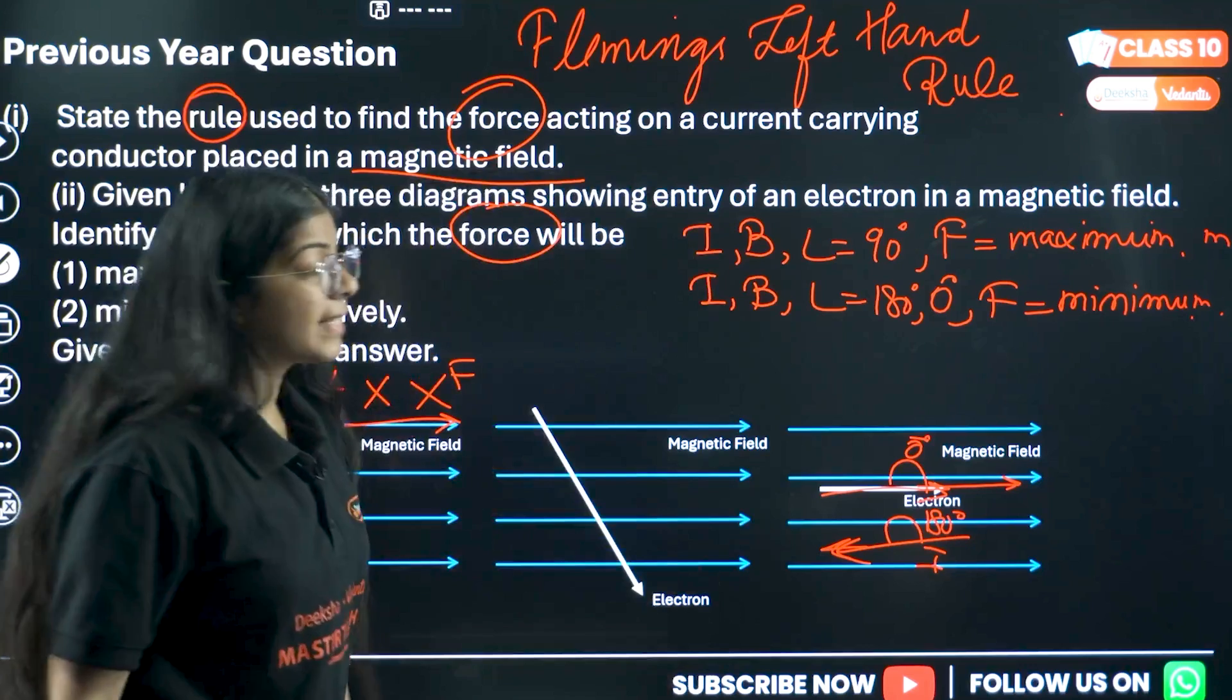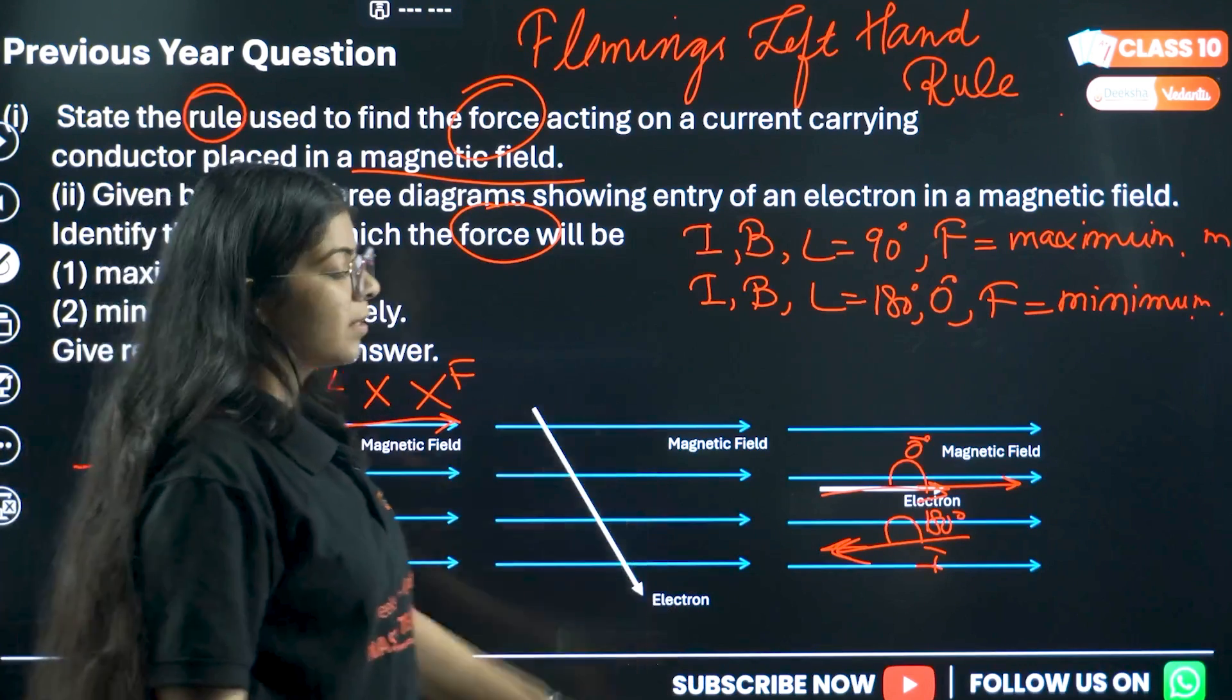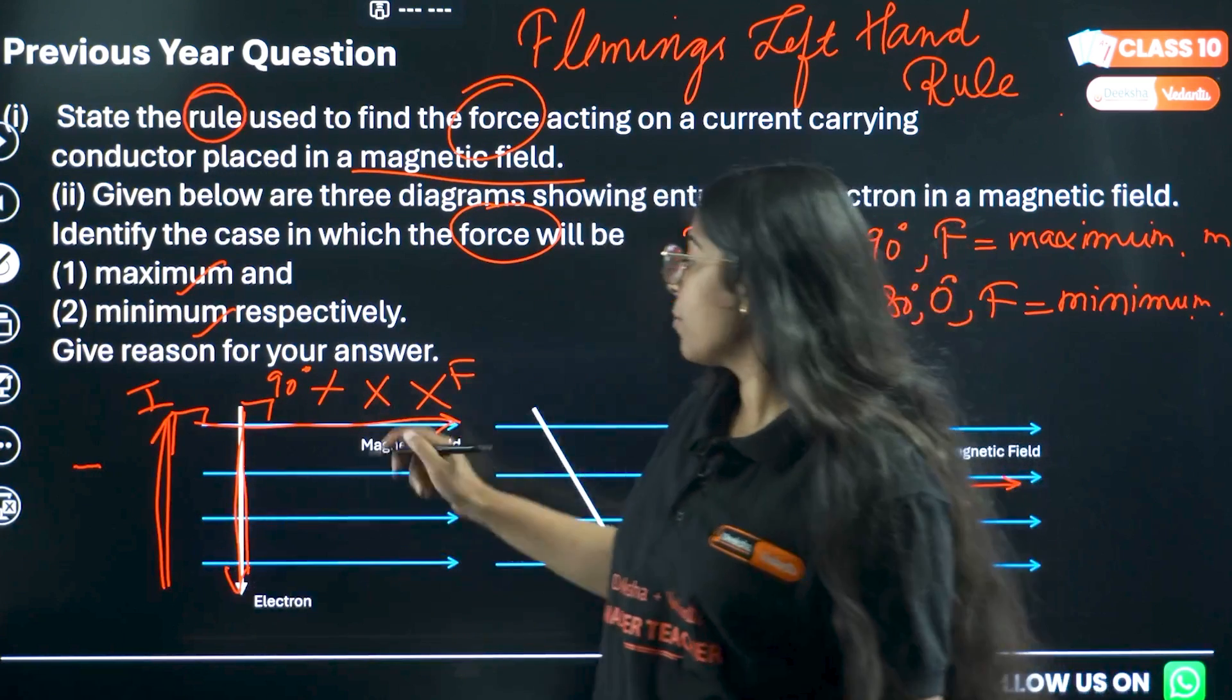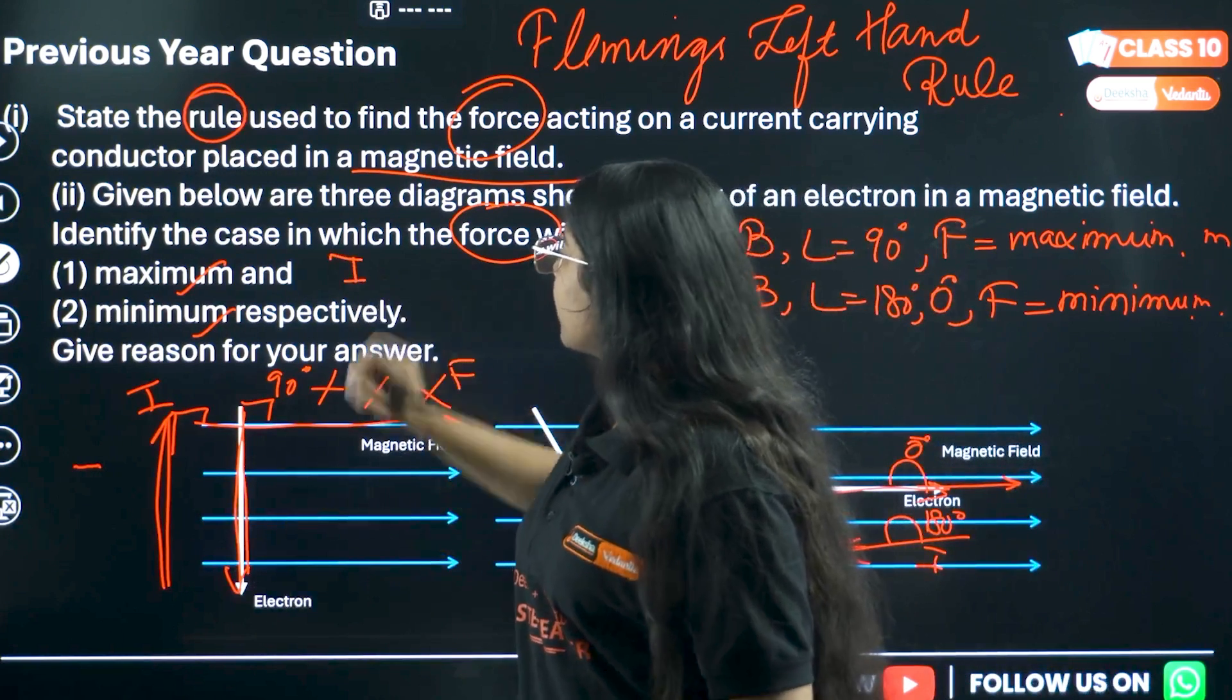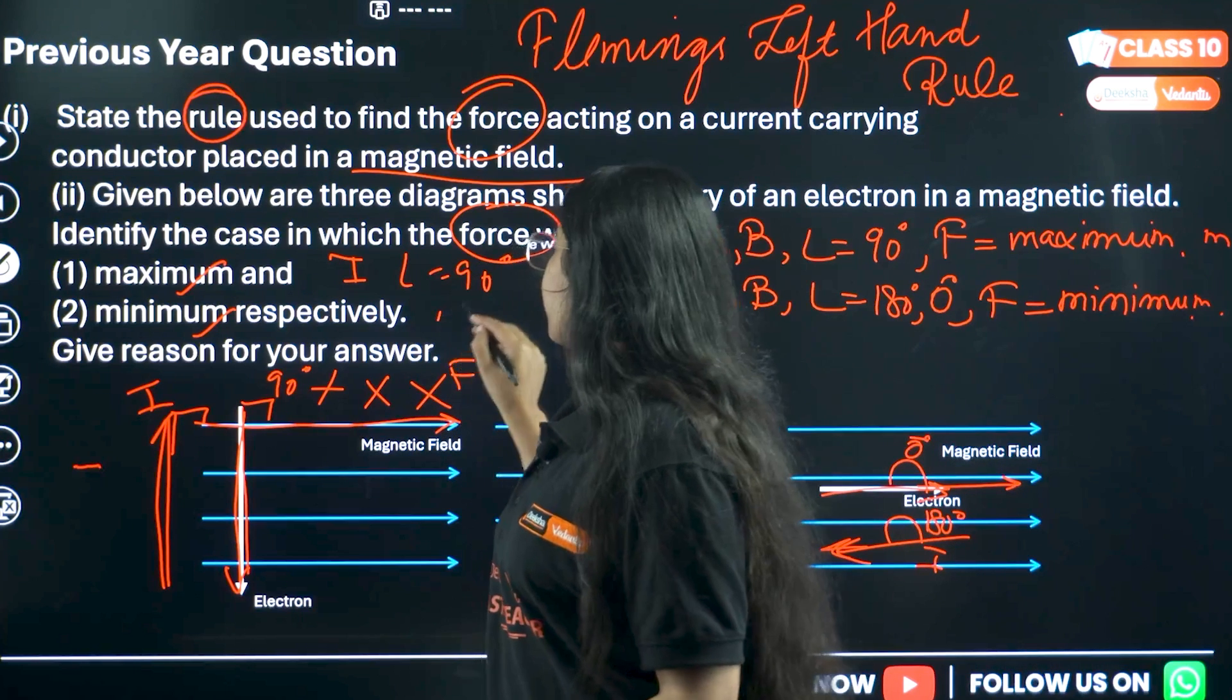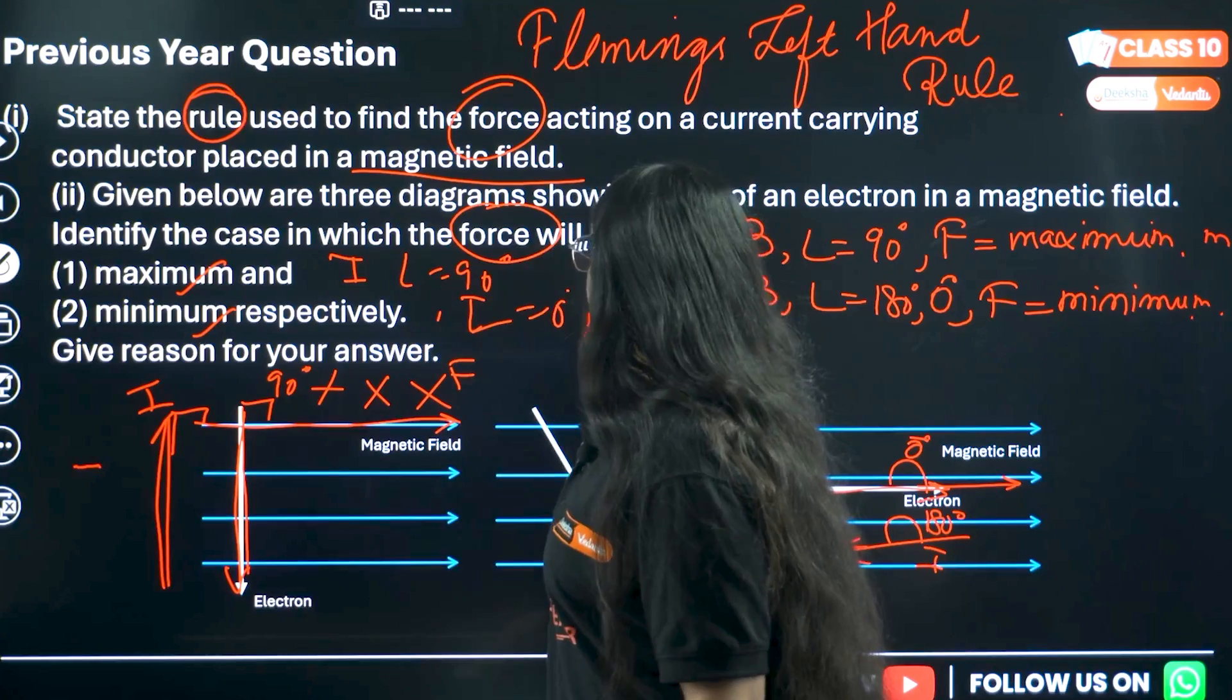Now to look at the second diagram it's neither 90 nor 180. So on this the force will be between maximum and minimum. So in first diagram the force will be maximum where the angle is 90 degree. In second diagram the force will be minimum where the angle is 0 degree or 180 degree.